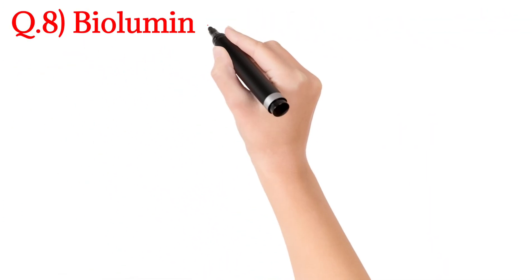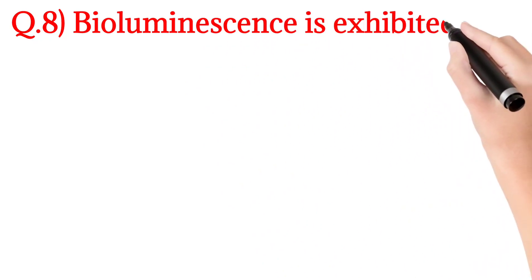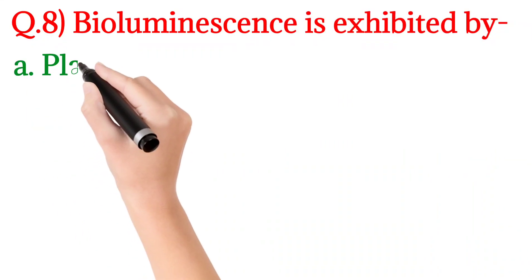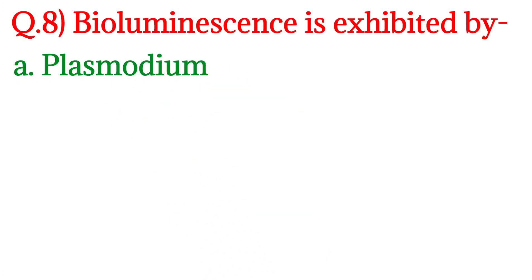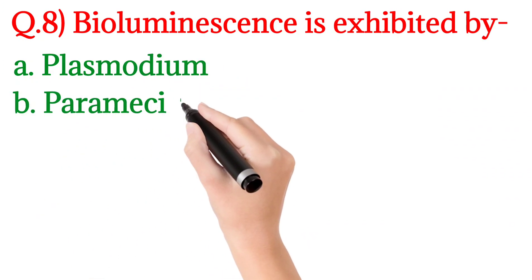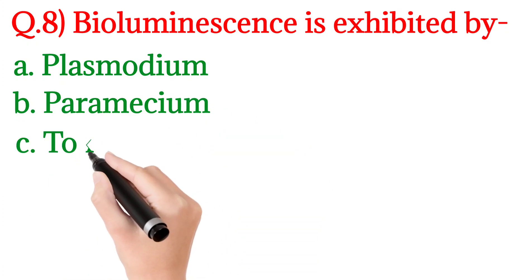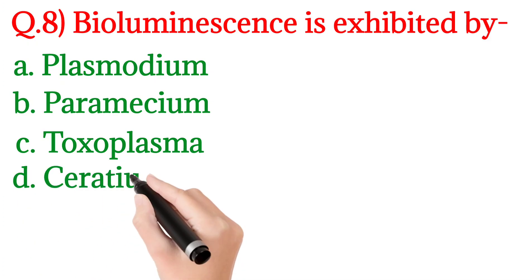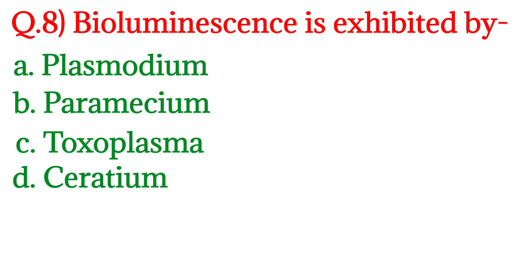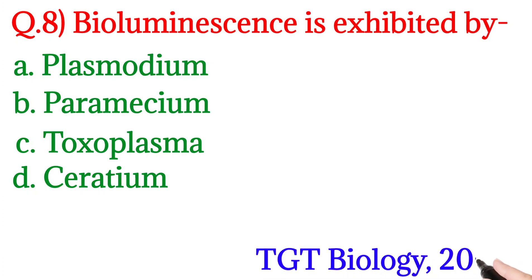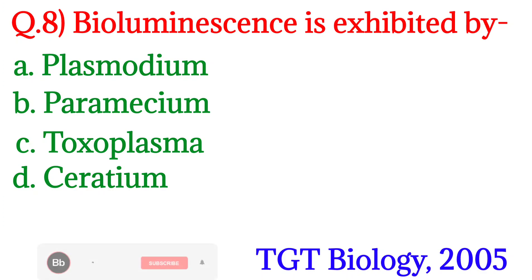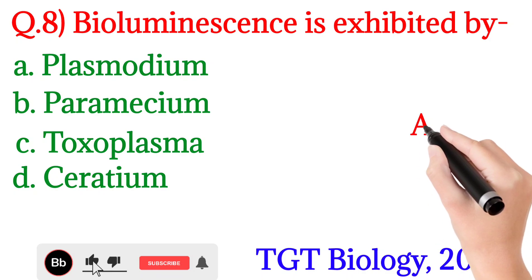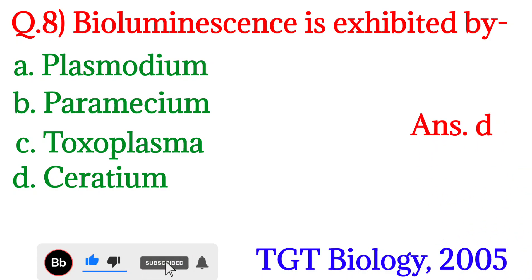Question 8: Bioluminescence is exhibited by? Option A: Plasmodium, Option B: Paramecium, Option C: Toxoplasma, Option D: Ceratium. This question was asked in TGT Biology 2005. The answer is Option D: Ceratium.